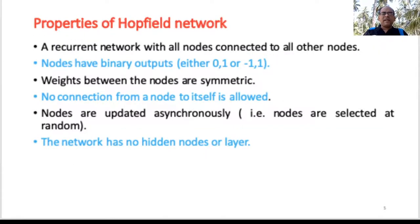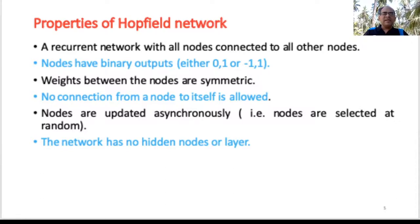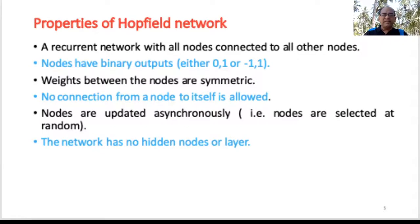The key properties of a Hopfield network are: it is a recurrent network; all nodes are connected to all other nodes; nodes have binary outputs — either 0/1 or −1/+1; weights are symmetric; no self-connections are permitted; nodes are updated asynchronously, meaning they are selected at random; and the network has no hidden nodes or layers.